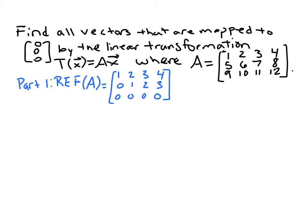In this problem, you're asked to find all the vectors that are mapped to the three-dimensional zero vector by the linear transformation matrix A times X, where this is your matrix A.